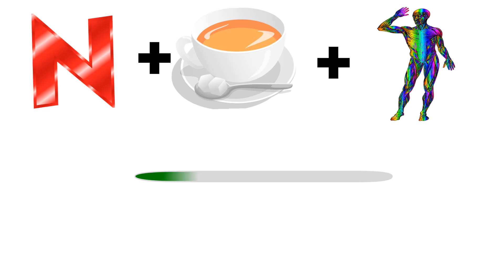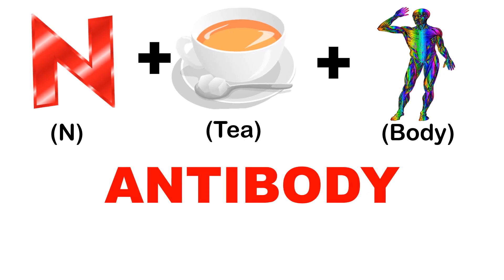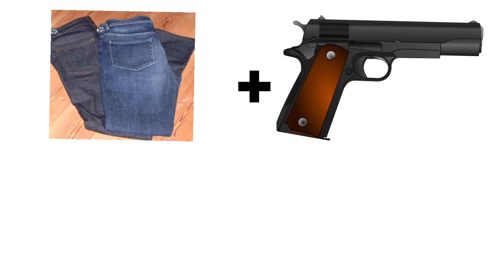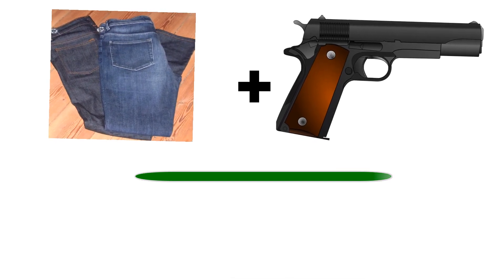The next term — three emojis are shown. Guess the term these emojis make when you combine them. The answer is antibody, because the first emoji represents 'anti', then T, and 'body', making antibody. Antibodies are glycoproteins produced by plasma B cells in response to antigens, and they ultimately trigger the immune response.